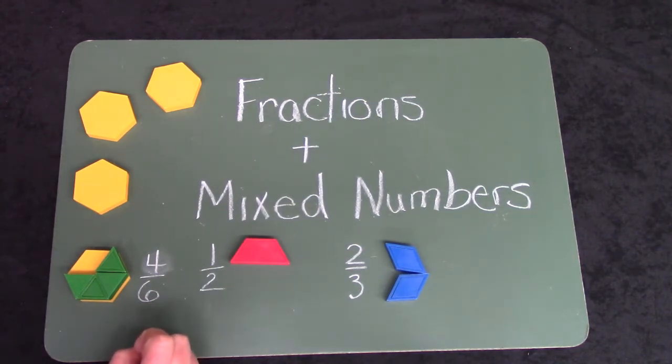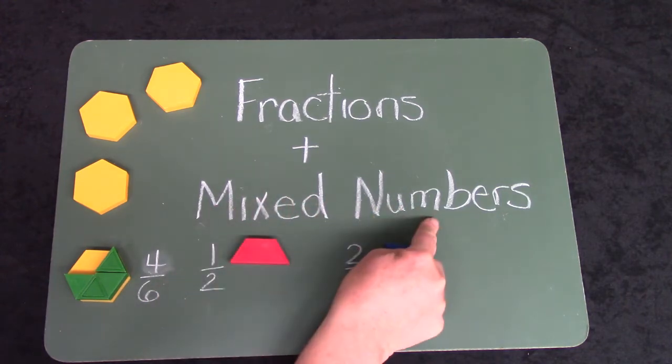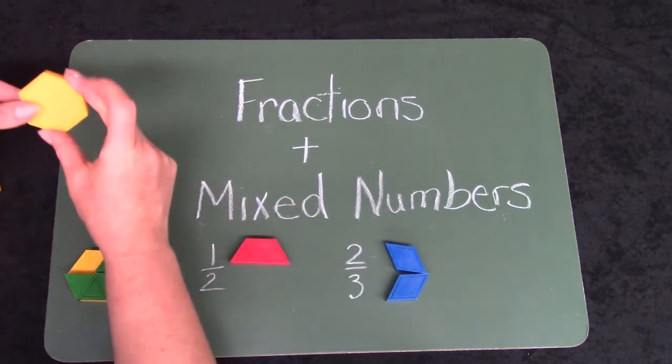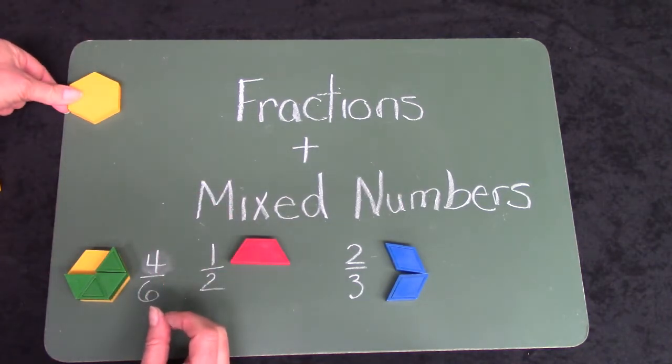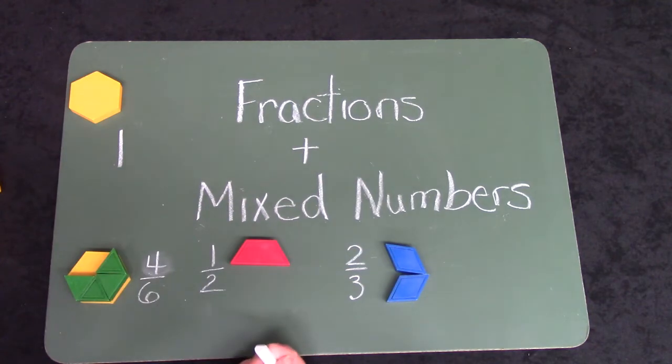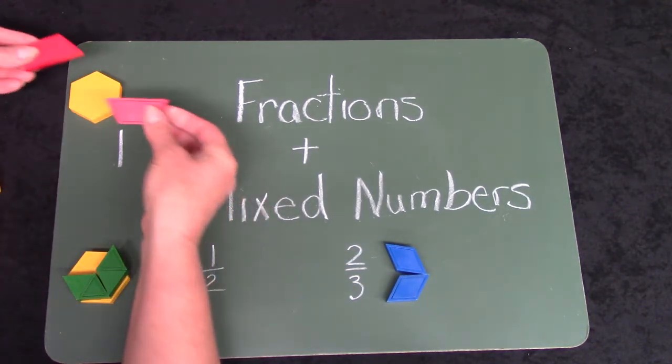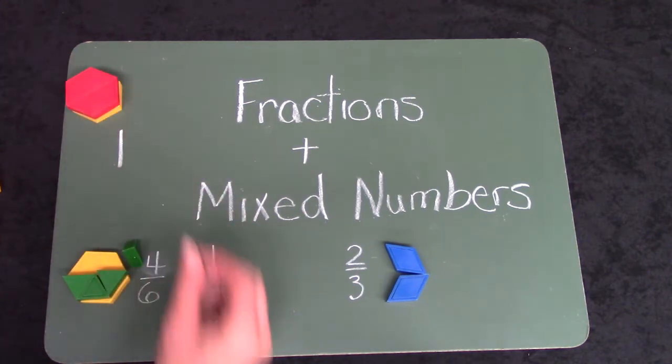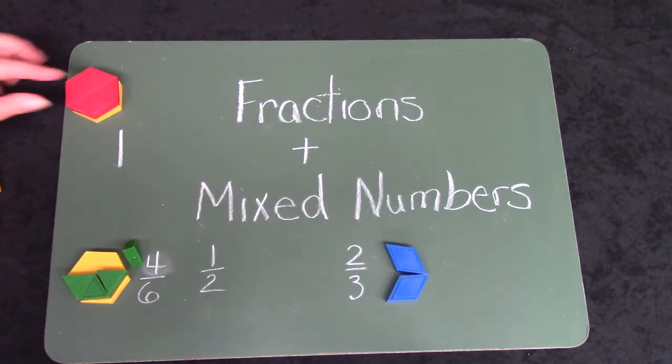Sometimes we have what we call mixed numbers. And a mixed number is when we take a whole number like one hexagon and we add something to it. Let's take a look at how many trapezoids we would need to have a full hexagon. And we would need two.